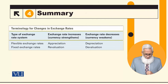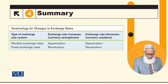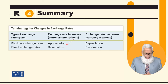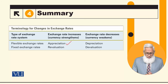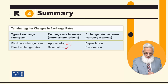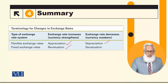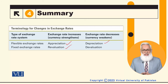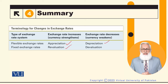To summarize the terminology: in a fixed exchange rate system, a rise is revaluation. In a flexible exchange rate system, a fall is depreciation. In a fixed exchange rate system, a fall is devaluation. This is the terminology that is used. Thank you.